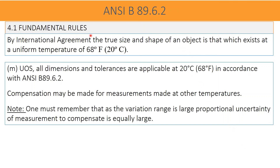According to international standard ANSI B89.6.2, clause 4.1, the fundamental rule states that the agreement on the true size and shape of an object is that which exists at a uniform temperature of 20 degrees centigrade. Unless otherwise specified, all dimensions and tolerances are applicable at 20 degrees centigrade in accordance with ANSI B89.6.2. Compensation may be made for measurements taken at other than this temperature, but one must remember that as the variation range is large, the proportional uncertainty of measurement to compensate is equally large.